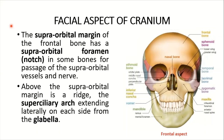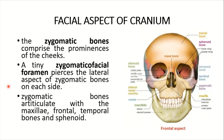The supraorbital margin of the frontal bone has a supraorbital foramen. Above the supraorbital margin is a ridge — the superciliary arch. The superciliary arch extends laterally from the glabella on each side. The glabella is the most prominent point above the nasal bones, in the center of the forehead — this is a craniometric point.